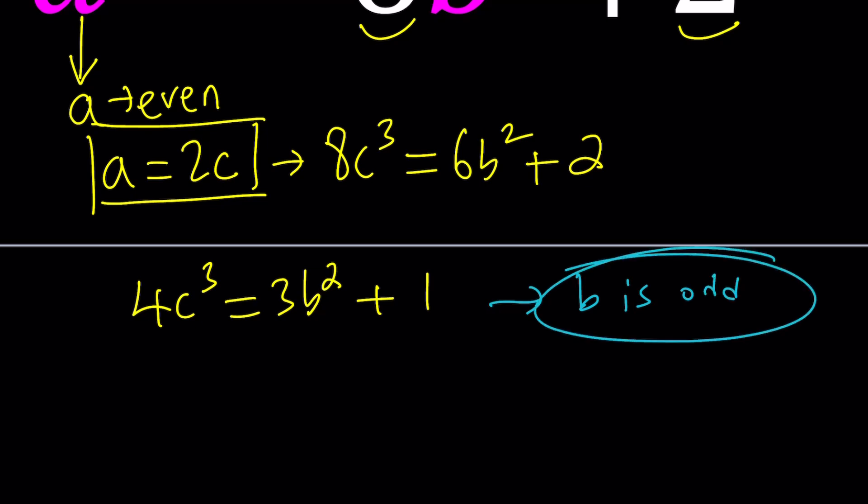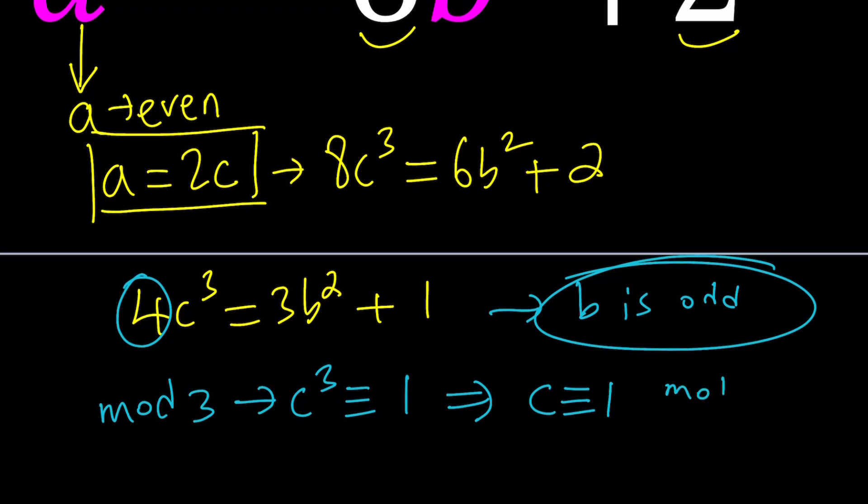Now we're going to look at this from a mod 3 perspective. Obviously you could also verify that by looking at it mod 2, but let's go ahead and look at this from a mod 3 perspective. If you divide everything by 3 and focus on the remainders, from the left hand side you're going to get c³ because 4 is 1 mod 3, and then 3b² is going to be 0, and c³ is going to be 1 mod 3, which implies that c is 1 mod 3. Why is that happening? Because cubing doesn't change any result mod 3. So b is odd and c is 1 mod 3.